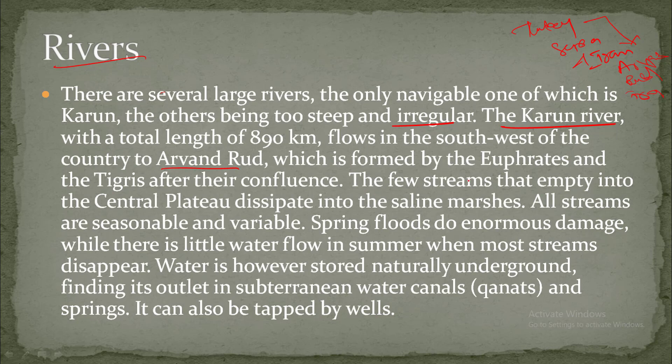The few streams that empty into the central plateau dissipate into salt marshes. All streams are seasonal and variable. Spring floods cause enormous damage, while there is little water flow in summer when most streams disappear.